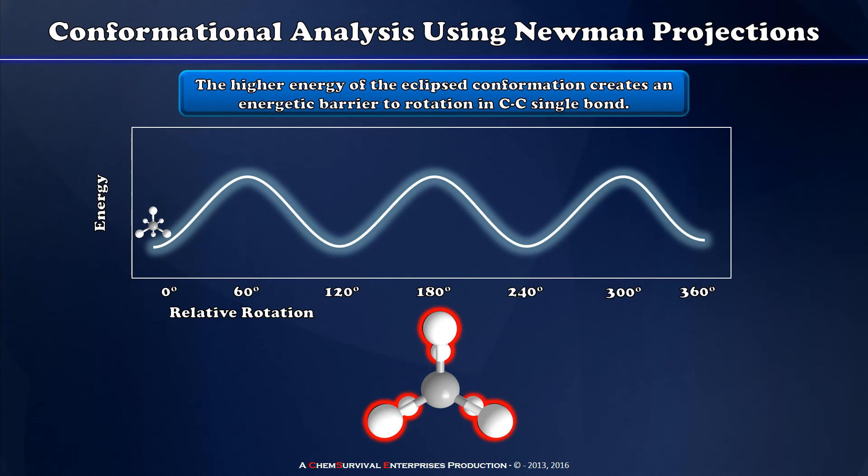Notice what's happened now. My substituents are all directly in front of and behind one another. So we call this the eclipsed conformation because those substituents in the front are eclipsing those in the back. In this conformation they're as close together as possible and therefore have the greatest amount of steric repulsion.